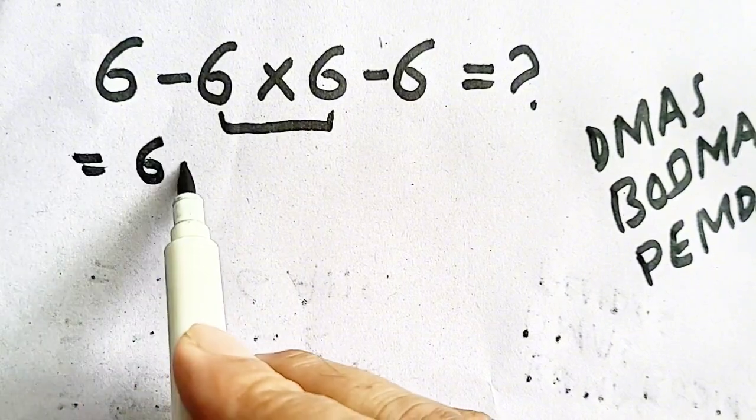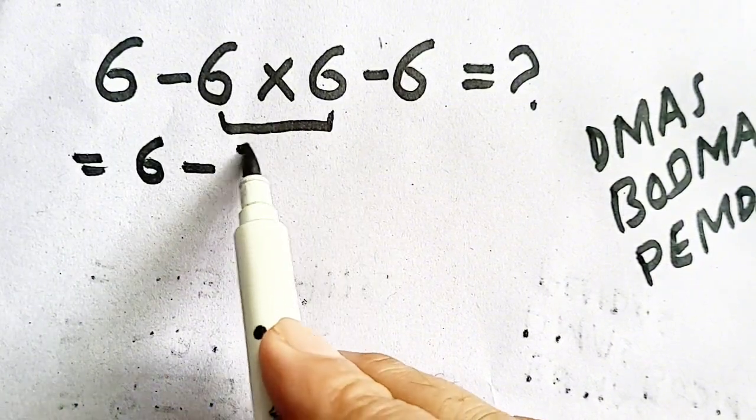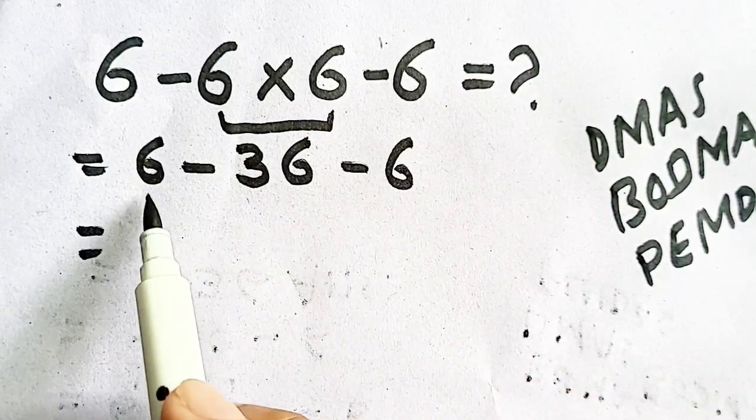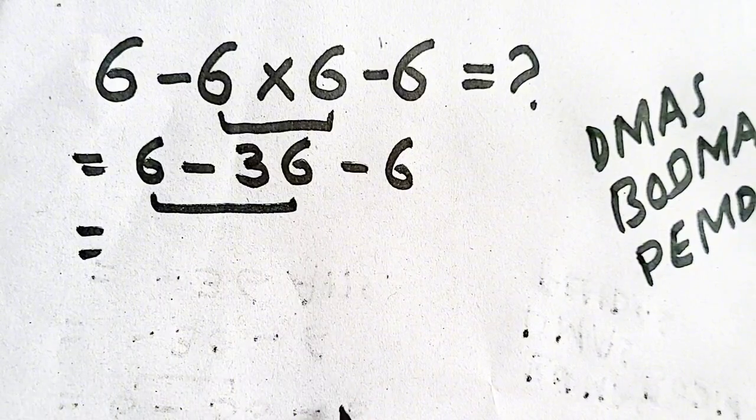So, six minus six multiplied by six minus six. Six multiplied by six equals thirty-six, giving us six minus thirty-six minus six. Now this subtraction will be carried out.